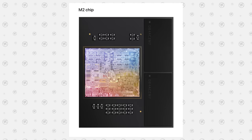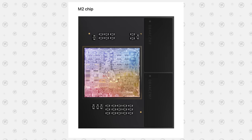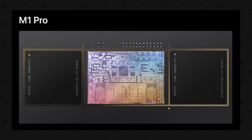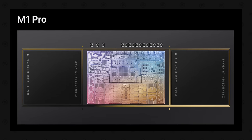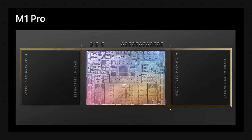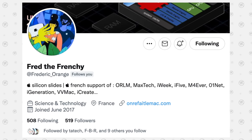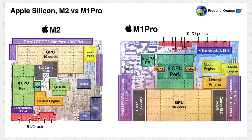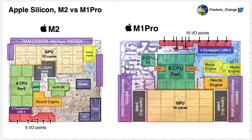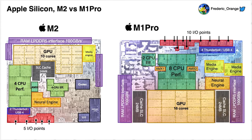Before jumping into estimating the M2 chip's performance and comparing it to the M1 Pro, I want to compare the actual M2 and M1 Pro dies and talk about the main differences we can see. Frederick Orange on Twitter created a graphic analysis of the dies, so let's quickly run through some of the main differences and what they'll mean to you.